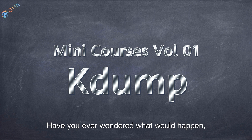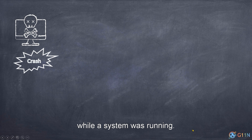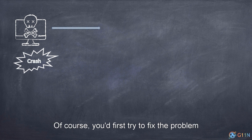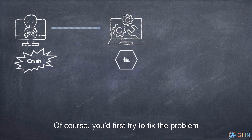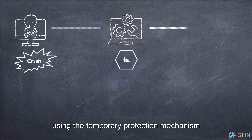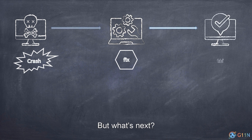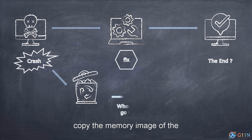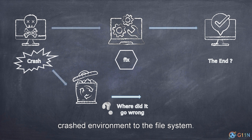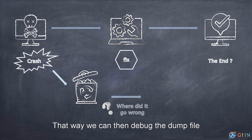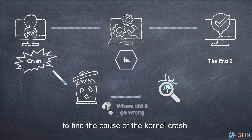Have you ever wondered what would happen if a sudden crash occurred while a system was running? Of course, you'd first try to fix the problem using the temporary protection mechanism — watchdog or something similar. But what's next? Well, it's also important to copy the memory image of the crashed environment to the file system. That way, we can then debug the dump file to find the cause of the kernel crash.